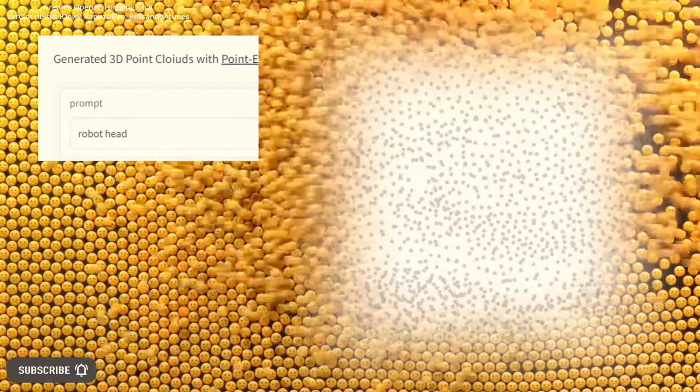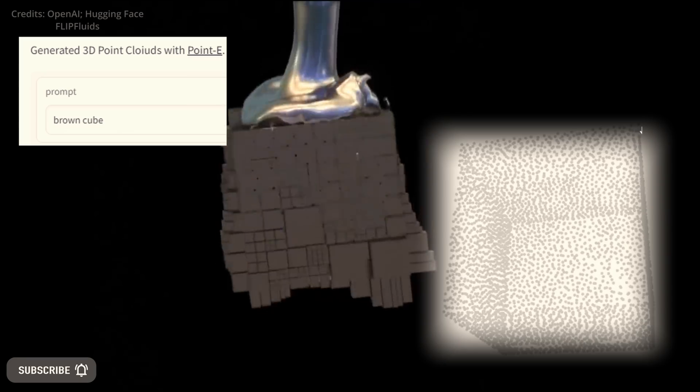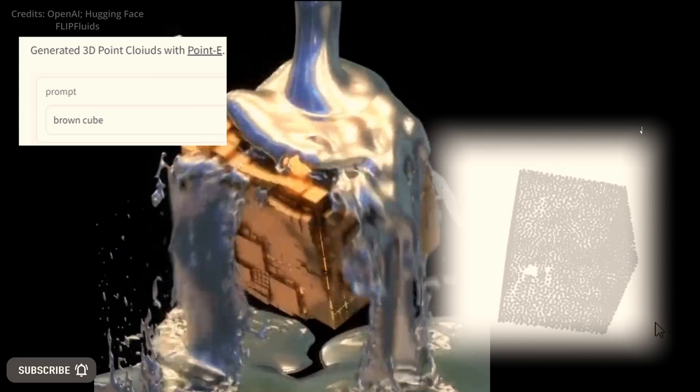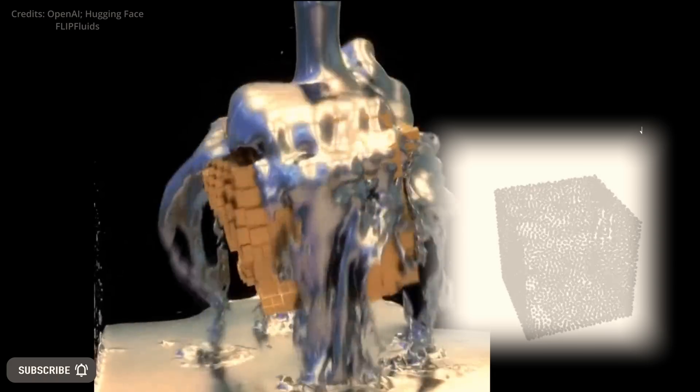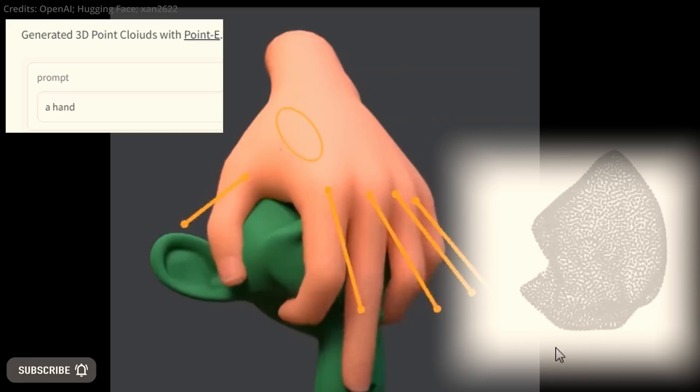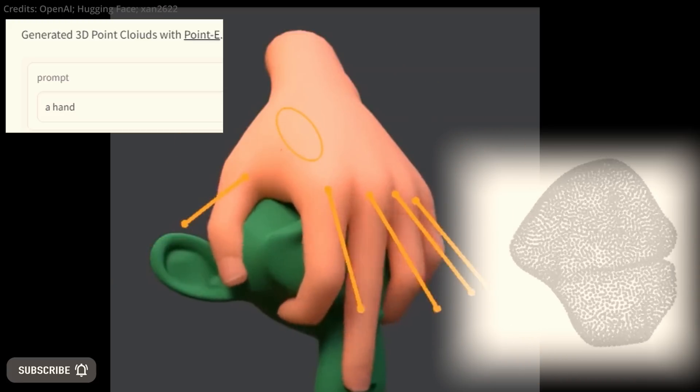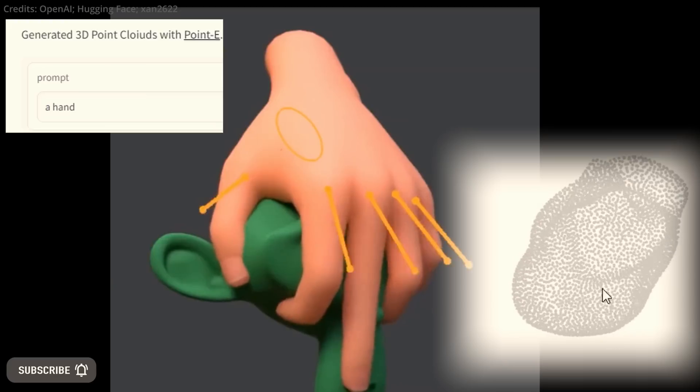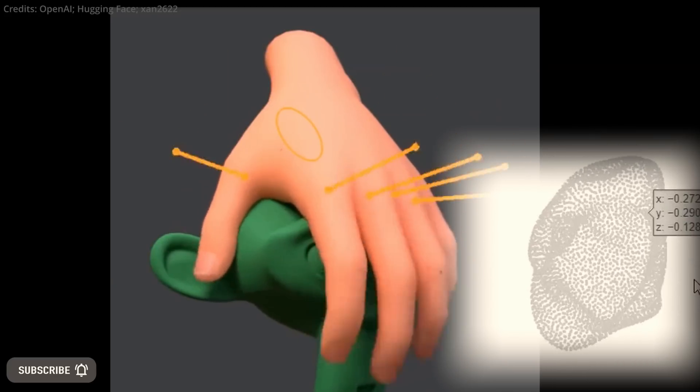The main goal of Point E is to efficiently generate point clouds, and it's able to create 3D models in just one to two minutes of processing time, whereas state-of-the-art methods can take multiple GPU hours to complete a rendering. In fact, Point E is estimated to be about 600 times faster than Google's DreamFusion text-to-3D model.